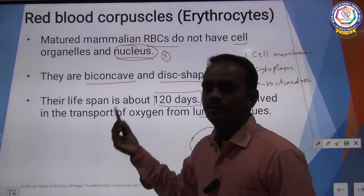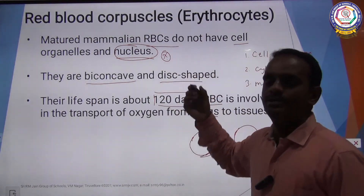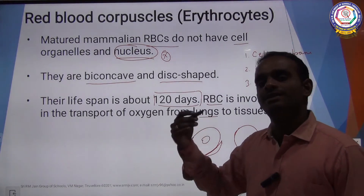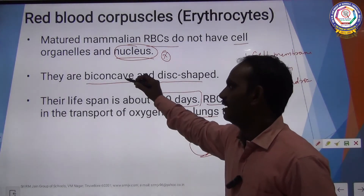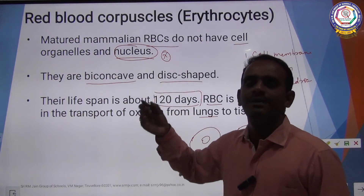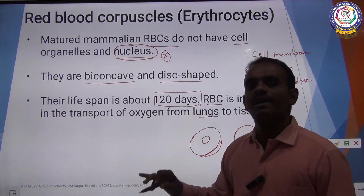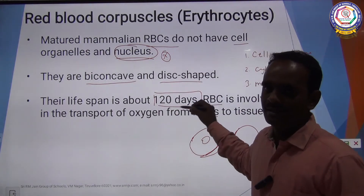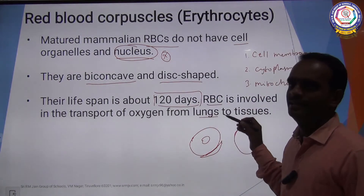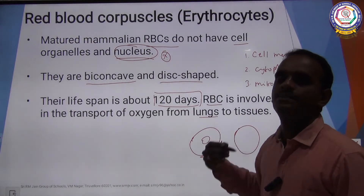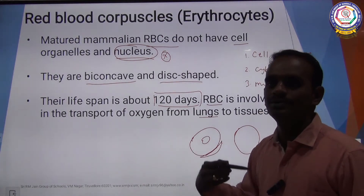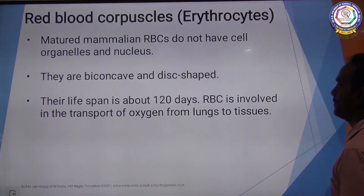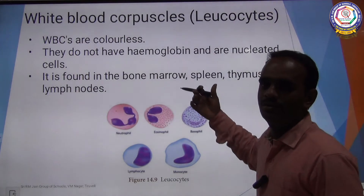To summarize RBC: the other name is erythrocytes; mature mammalian RBC does not have cell organelles or nucleus; shape is biconcave disc; lifespan is 120 days; main function is transport of oxygen from the lungs to all parts of the body.